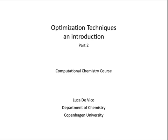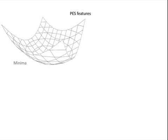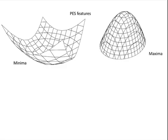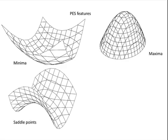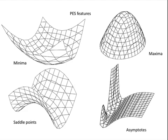Hi, this is Introduction to Optimization Techniques, Part 2, part of the Computational Chemistry course at the Department of Chemistry at Copenhagen University. Potential energy surfaces can have many features. Among them, there can be minima, maxima, saddle points, and asymptotes.